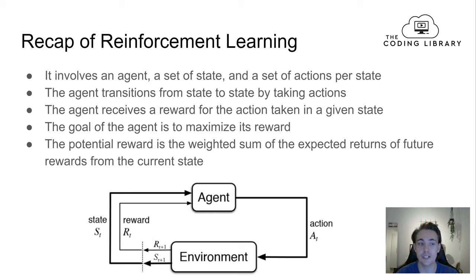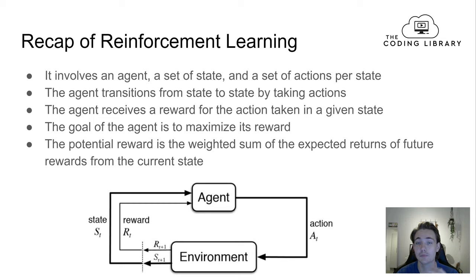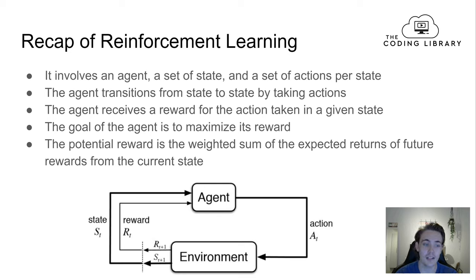First, let's have a short recap of what reinforcement learning is. Reinforcement learning involves an agent, a set of states the agent can be in, and a set of actions per state that the agent can take for a given state. The agent transitions from state to state by taking those actions, and when it takes an action it receives a reward telling it how good it performed.